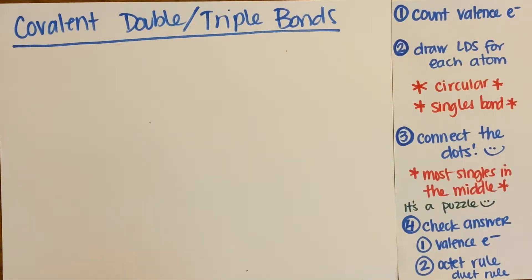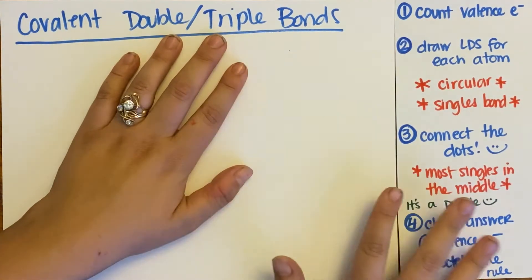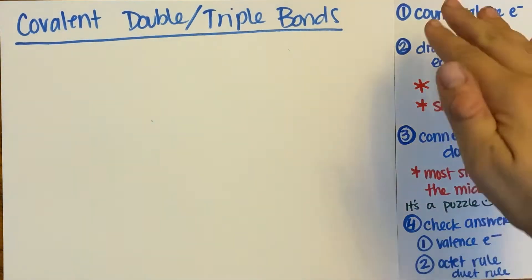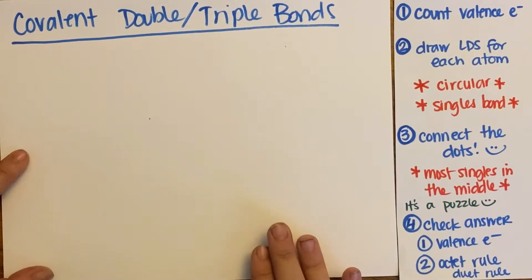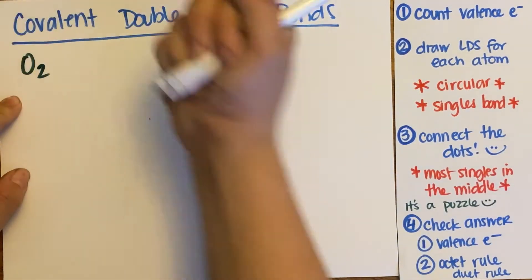So when we do covalently bonded molecules, when we have things that have covalent bonds, you can actually make double and triple bonds that are covalent. Now you follow the exact same rules. Nothing changes about the four steps. It's just more complicated, and you might need to redraw your structure after you figure out where those electrons are going to bond. So let's just jump right in and do some examples.